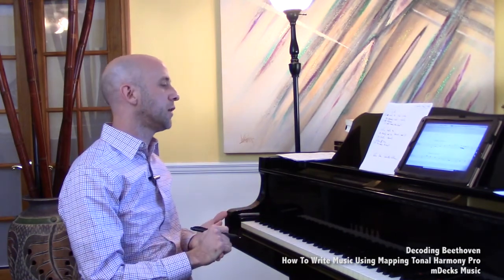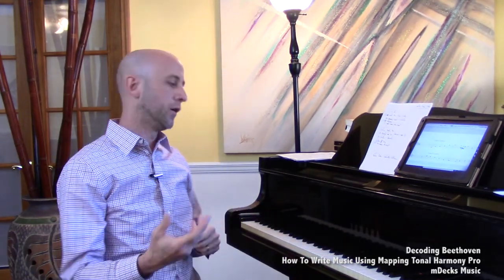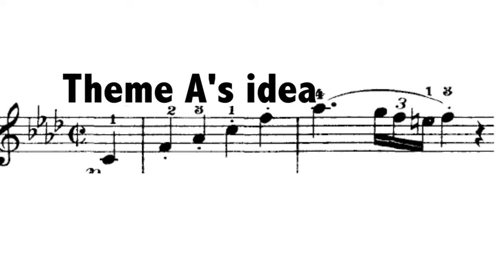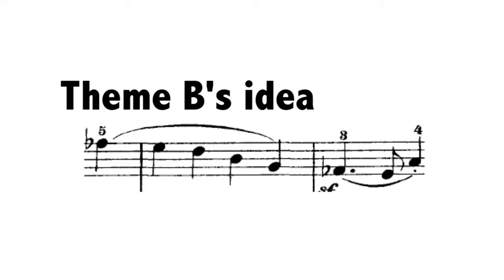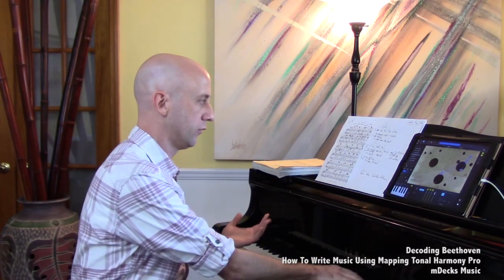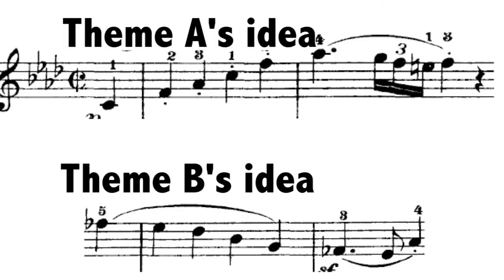What else do they have in common? Let's look at the fact that they're both arpeggios. In theme A's idea you're basically breaking the F minor chord — that whole idea is based off of breaking that chord. Theme B's idea is built off of breaking what is basically just an E flat 7 flat 9 chord. That chord resolves to its one, so what we have is essentially a 5-1. We have theme A's idea breaking the F minor chord and theme B's idea breaking the E flat 7 flat 9, which eventually resolves to A flat.